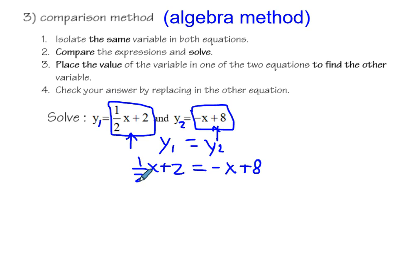And then I need to solve. So I have x on the left and x on the right. So I'm going to bring this one over here. And I have numbers on the left, numbers on the right. I'm going to bring my two there. So now I have one half x plus x is equal to eight minus two.